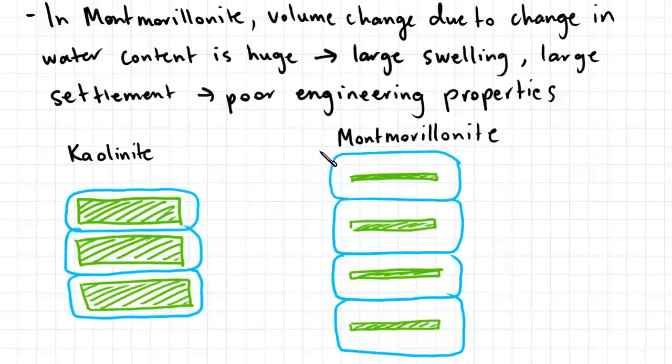However, in the case of montmorillonite, if the water from the diffuse double layer were to disperse, the volume change would be very significant, and this would result in very large settlements.